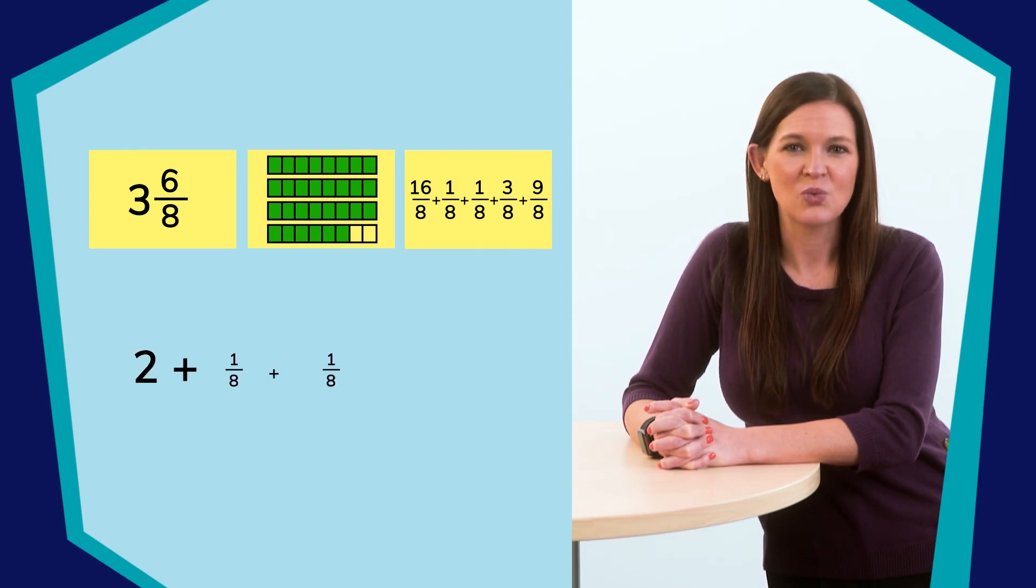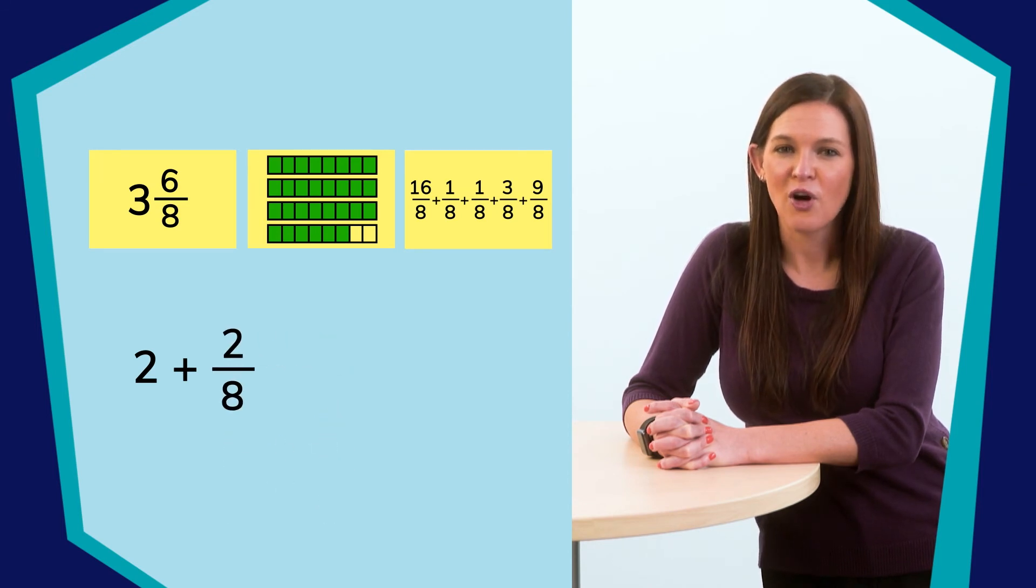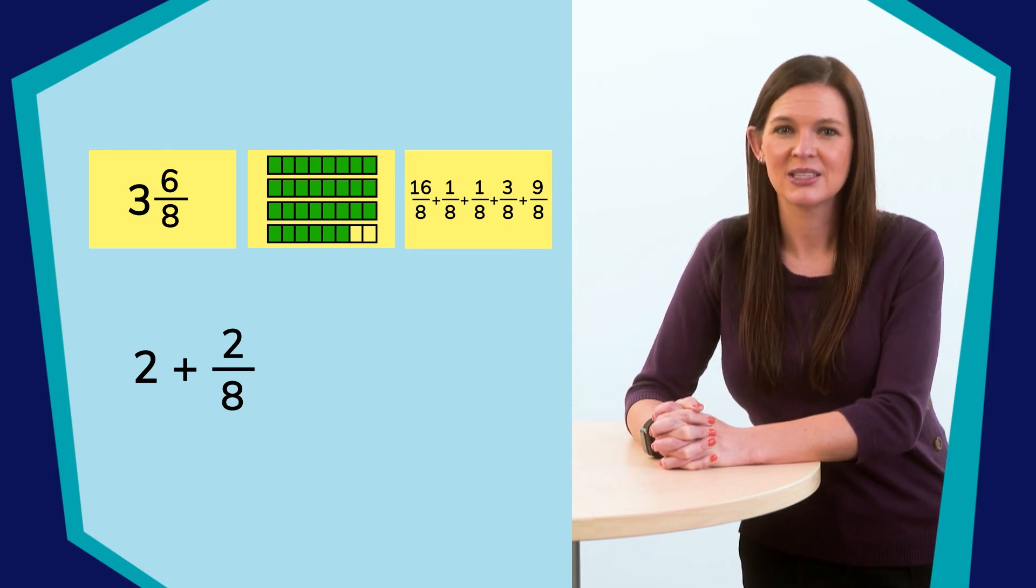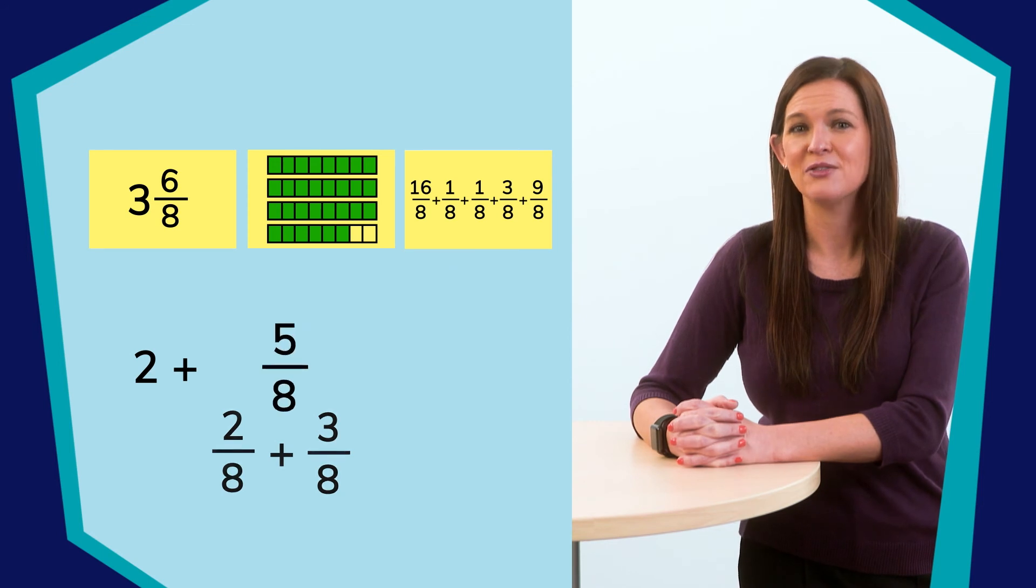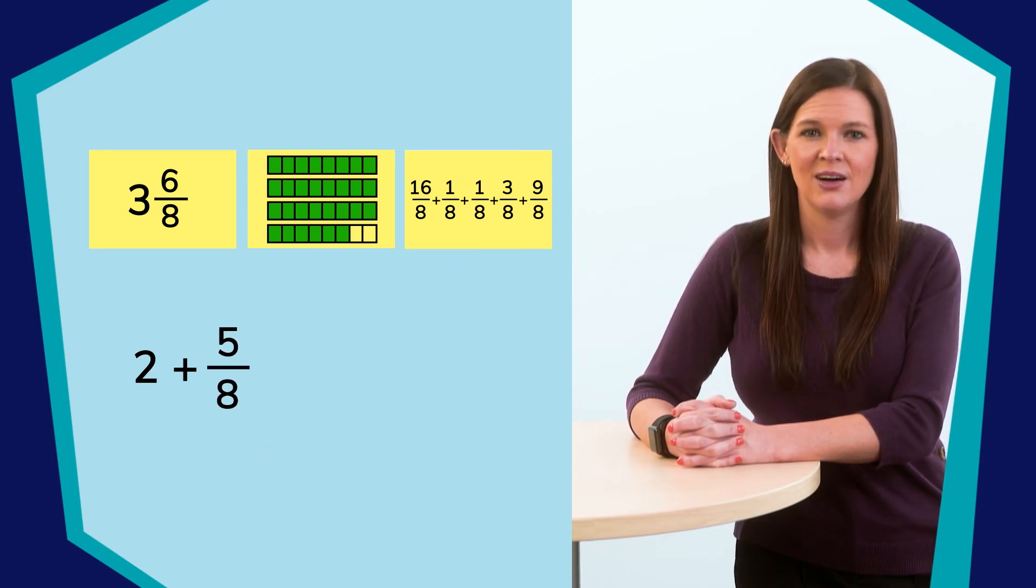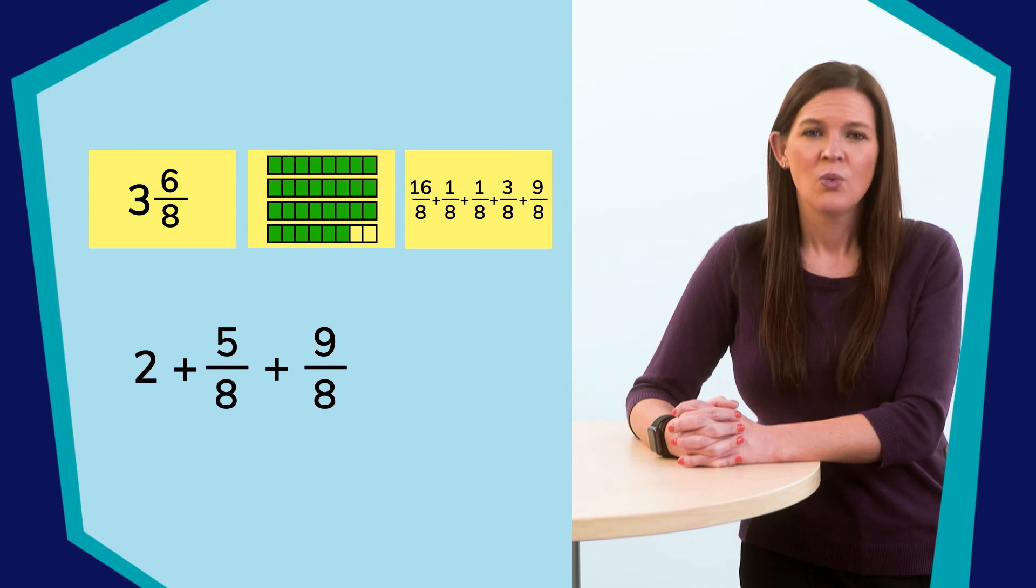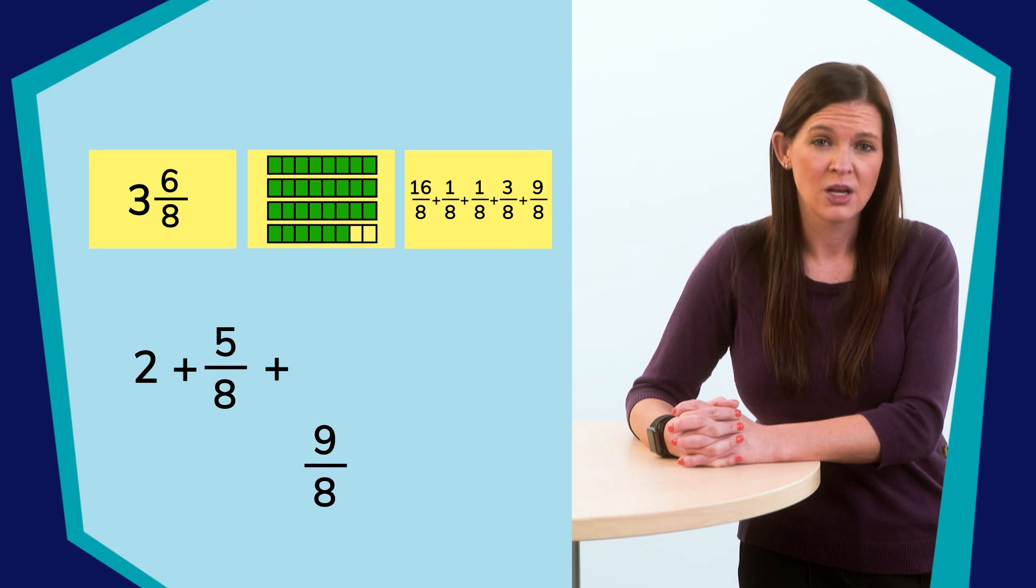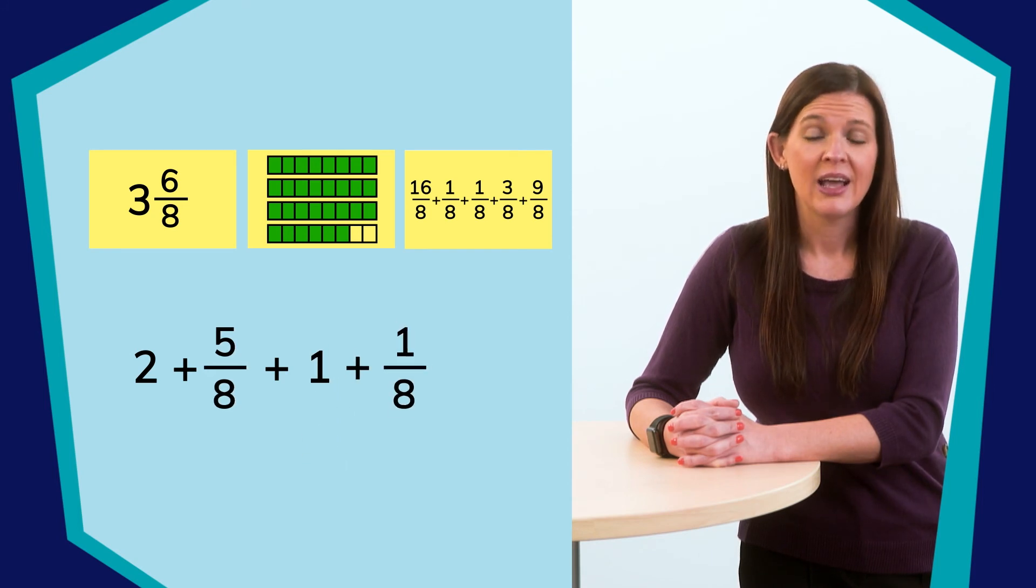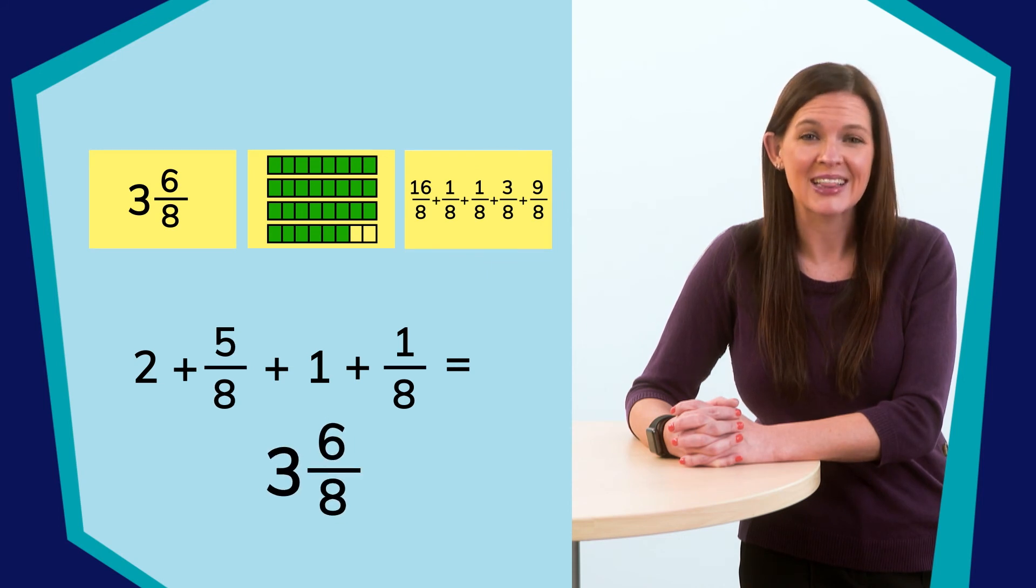Oh, look, unit fractions. One-eighth plus one-eighth. That's two-eighths. Okay, so far we have two and two-eighths. Next in the expression is three-eighths. If we add that to the two and two-eighths, we will have two and five-eighths. Uh-oh, another fraction greater than one, nine-eighths. Well, if one whole has eight pieces, then this would be one whole and one piece, so one and one-eighth. If I add that to the two and five-eighths, I will get three and six-eighths.